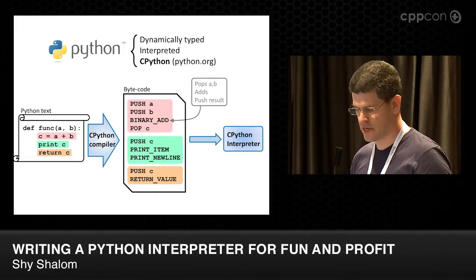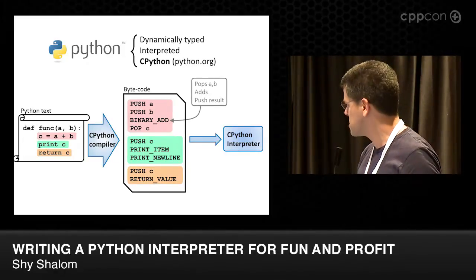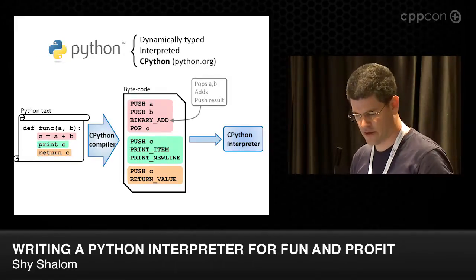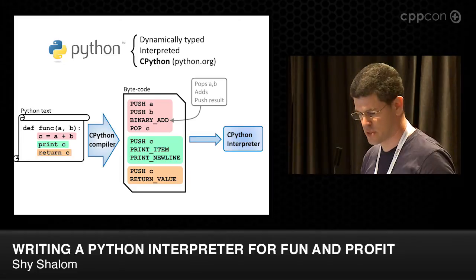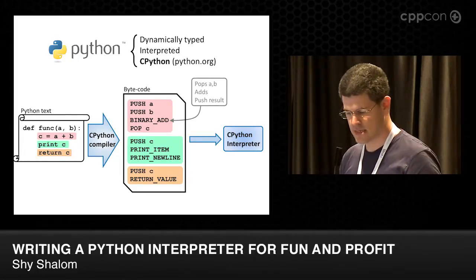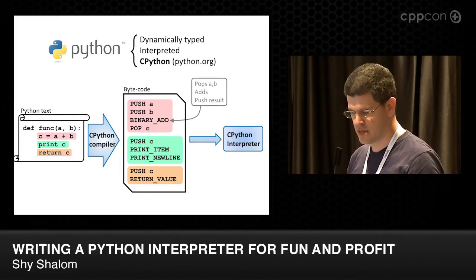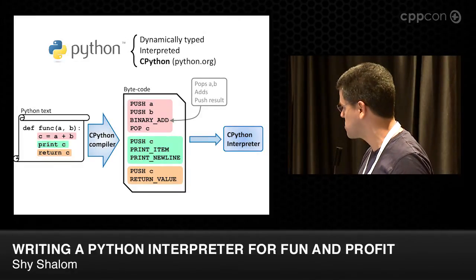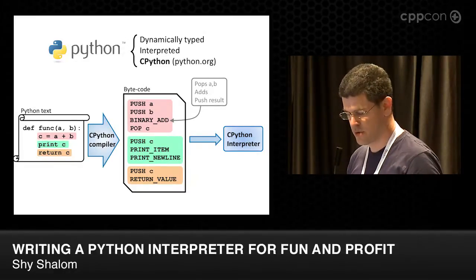The bytecode is pretty simple. It's a very simple stack machine. So, if you take the first statement, there's c equals a plus b, and then it's translated into push a and b. Binary add pops a and b, adds them and pushes the result back into the stack, and then pop c pops the result back into a variable c. Pretty simple bytecode.